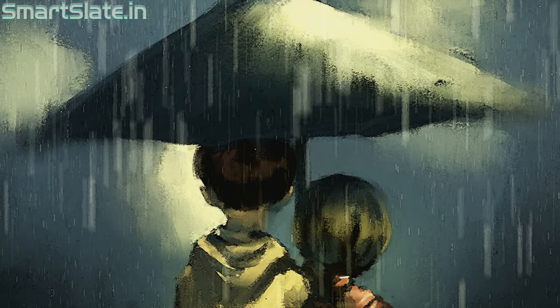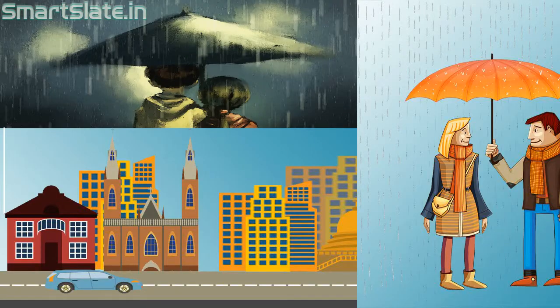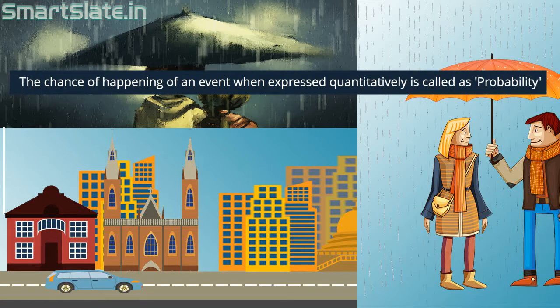Can you observe there is a degree of uncertainty involved in these events? There is a branch of mathematics which deals with such events by providing a way to measure the uncertainty quantitatively. The chance of happening of an event when expressed quantitatively is called probability. Let's learn more about probability.